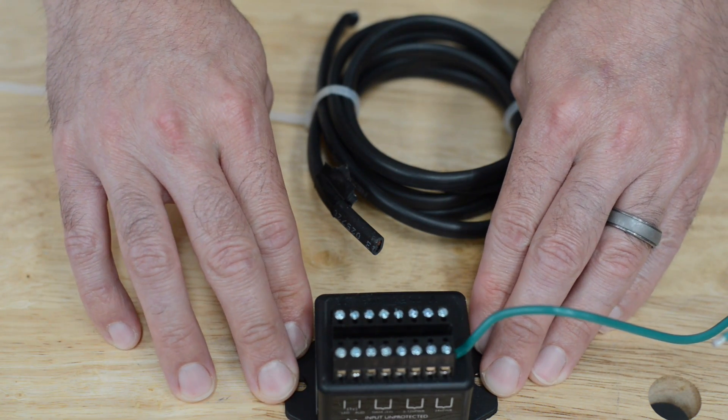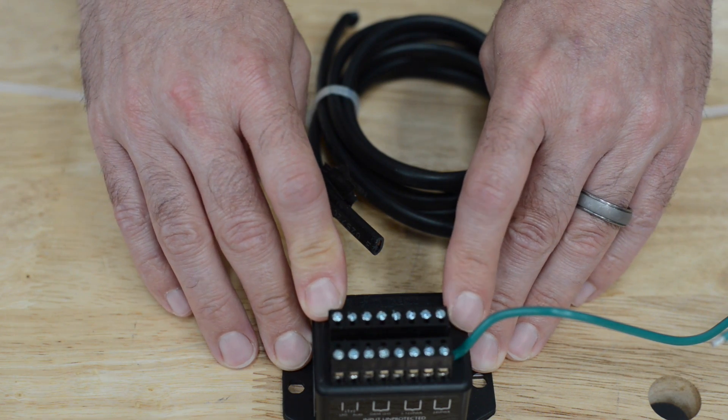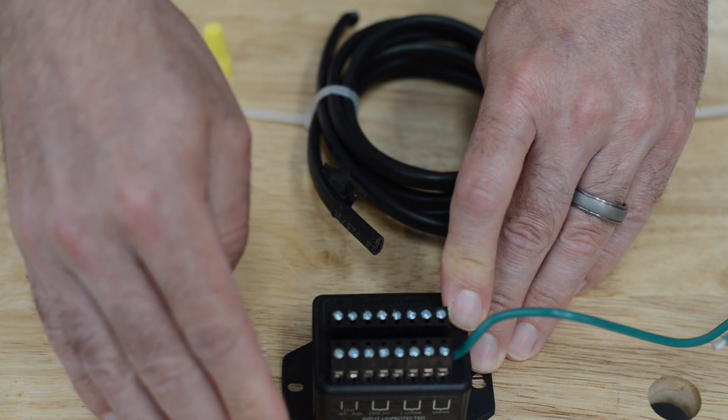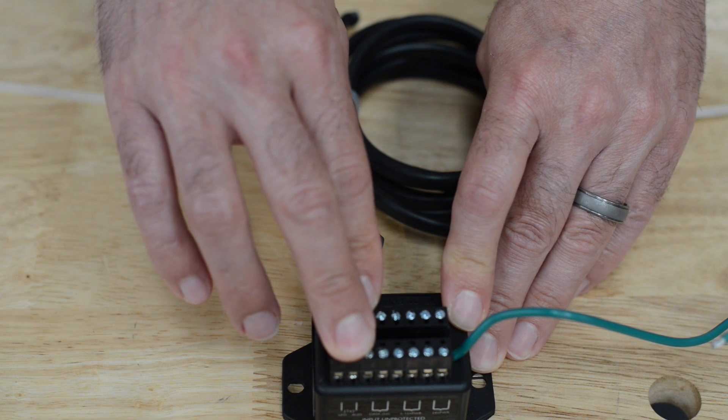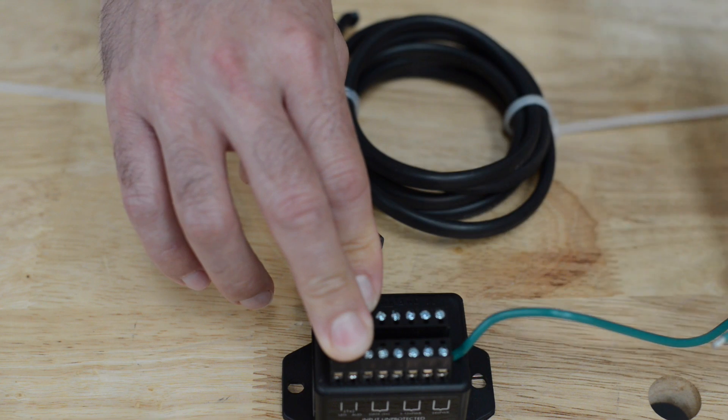It is important to understand the principle of how this works. This does not block surges. What happens is the electricity enters the surge suppressor. If it is detected to be a surge, it opens up the ground lead,